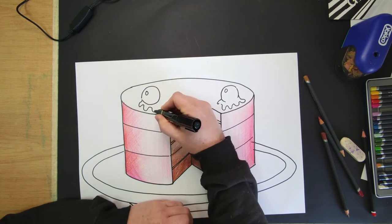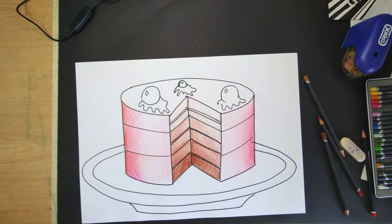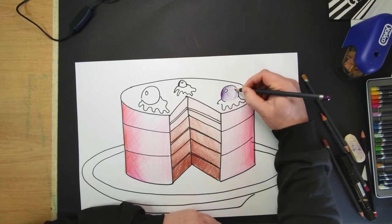Decorate the top of your cake with toppings of your choice. Use your imagination. I'm going to go for berry ice cream with sprinkles.